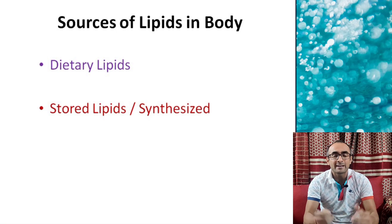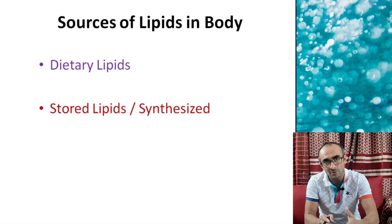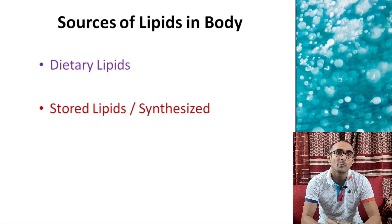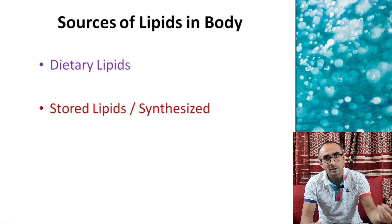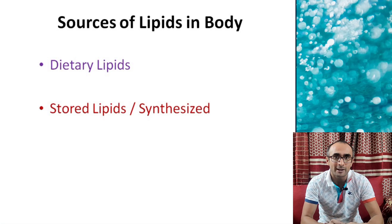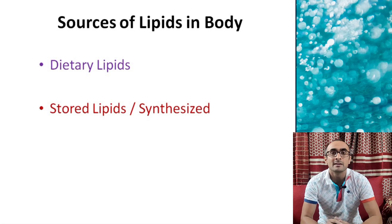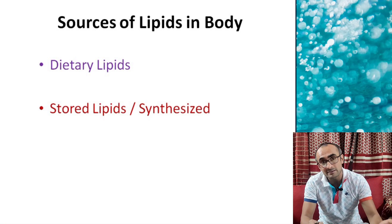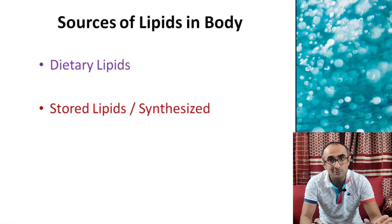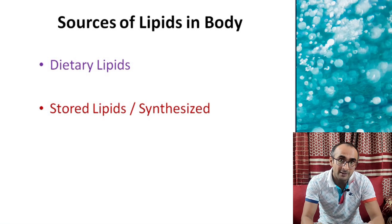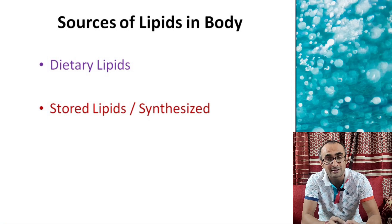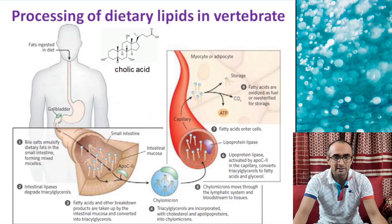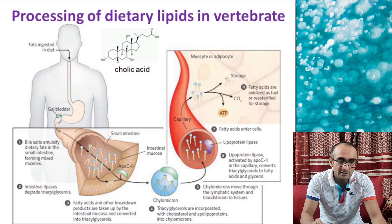When the body requires energy through lipid oxidation, the source of lipids can be either dietary lipids or lipids stored in adipocytes. Dietary lipids ingested with food are not digested in the stomach; they travel to the small intestine. Because lipids are insoluble in the aqueous intestinal environment, emulsification is required. This is achieved with the help of bile salts, which the liver synthesizes and stores in the gallbladder. When lipid-rich food reaches the small intestine, bile salts mix with the lipids to make them accessible to digestive enzymes.